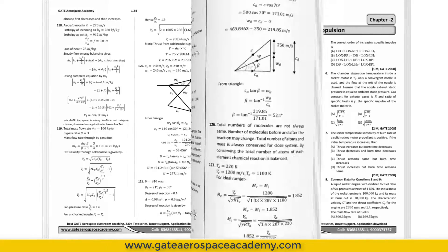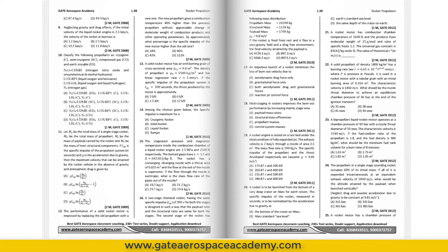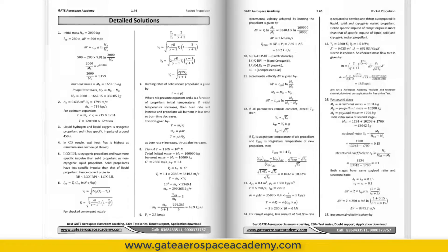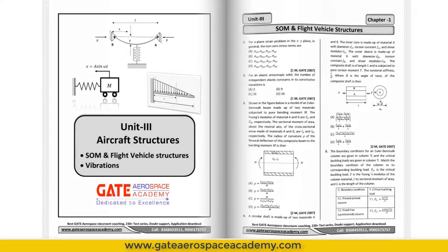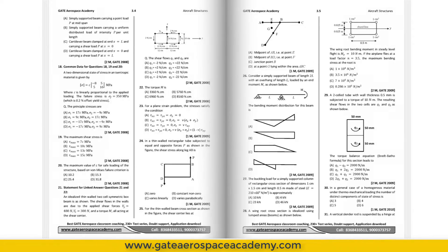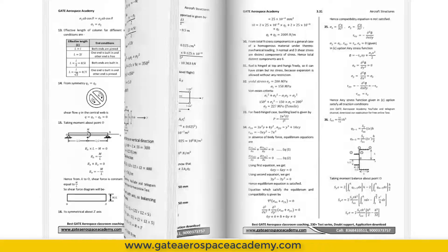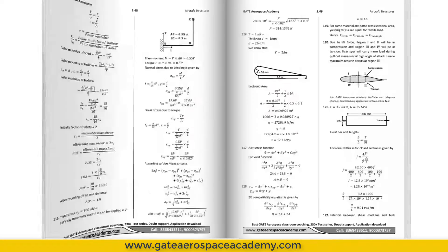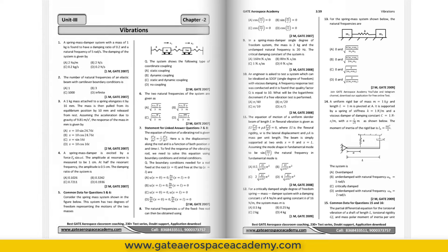Second chapter under Unit 1 is rocket propulsion. Similarly, structures has been divided into two chapters. First chapter is the combination of strength of materials and flight vehicle structures, and second chapter is vibration.